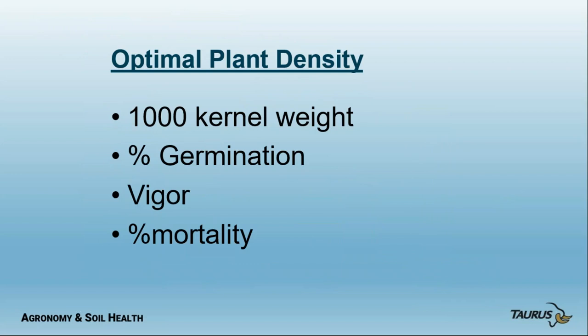A major question I get is: what should my seeding rate be? Seeding rate depends on thousand kernel weight, percent germination, percent mortality, and vigor. In spring wheat, targeting at least 30 plants per square foot is the rule of thumb. Some go up to 35 — if we're a little higher, the plants will figure it out and competition will resolve what's a reasonable plant density. The higher the rate, the fewer tillers you'll have as a general rule.